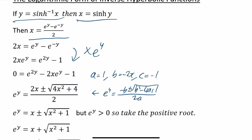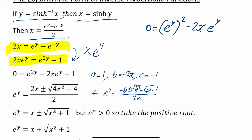Cross multiply by 2: you get 2x equal to e to the y minus e to the minus y. Then multiply through by e to the y, so you get e to the 2y minus 2x·e to the y minus 1 equals 0. That can be rewritten as e to the y squared minus 2x times e to the y minus 1 equals 0. This is a quadratic in e to the y.